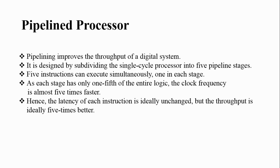We have already seen how to design a single cycle processor, and that single cycle process design itself we are adopting for pipeline processor, but with a few changes. The first basic change is that you are subdividing the single cycle processor into five pipeline stages. The advantage of that is five instructions can be executed simultaneously in each stage. Since you are having five stages in a five-stage pipeline, five instructions will be executed simultaneously in each stage.